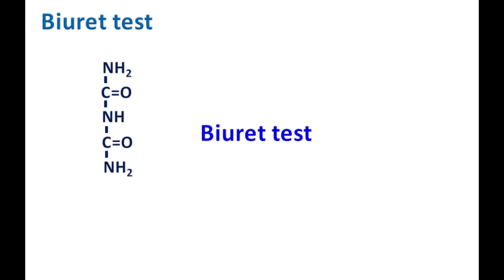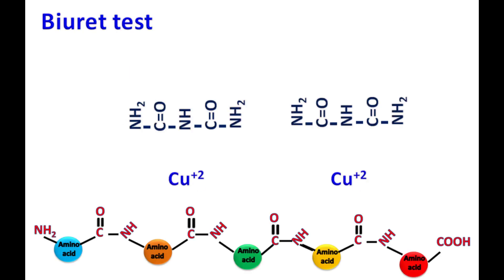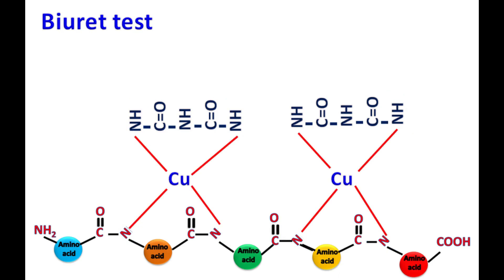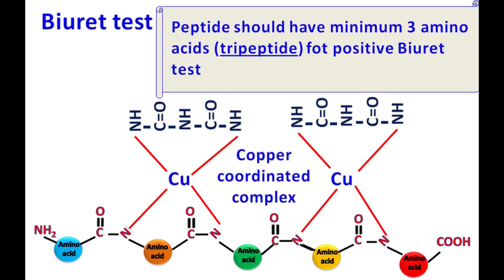In the presence of peptides or proteins, the nitrogens present in the peptide bond and the nitrogen present in the biuret react with copper to form a copper-coordinated complex, which shows maximum absorption at 540 nanometers. By measuring the optical density, the amount of protein in a given sample can be estimated.